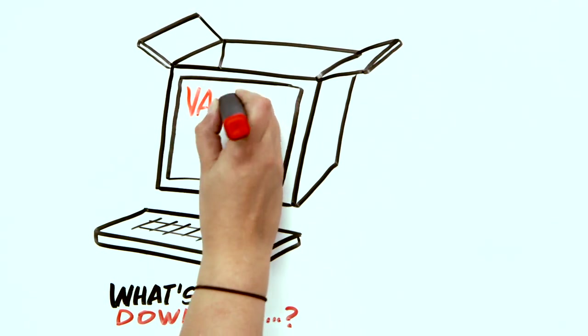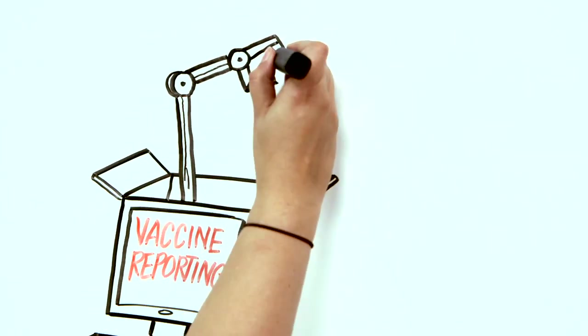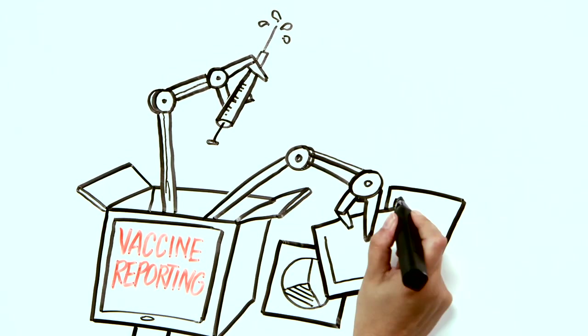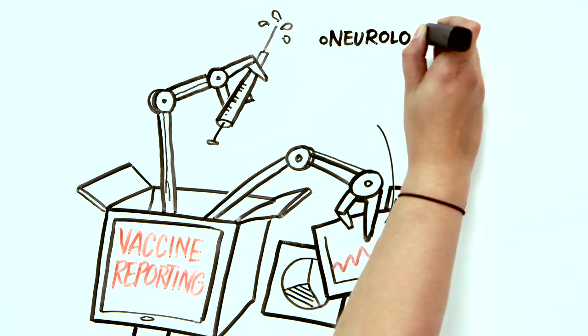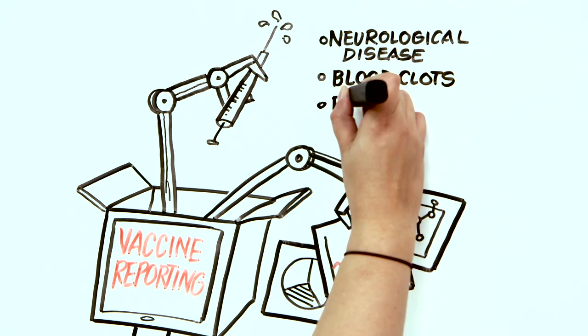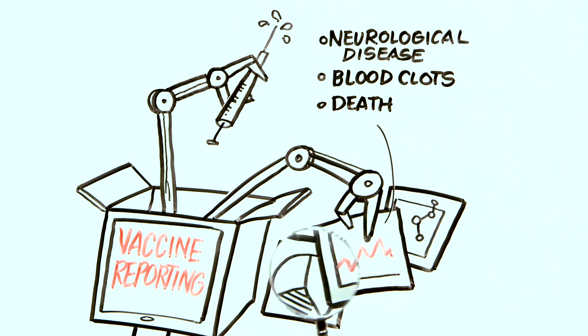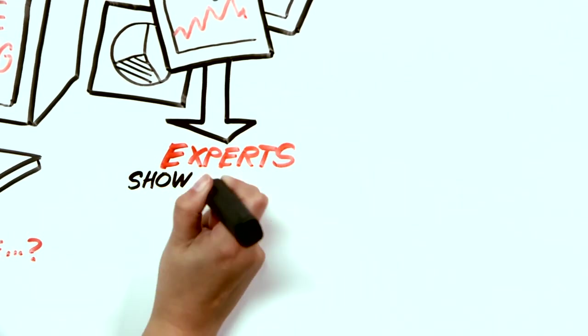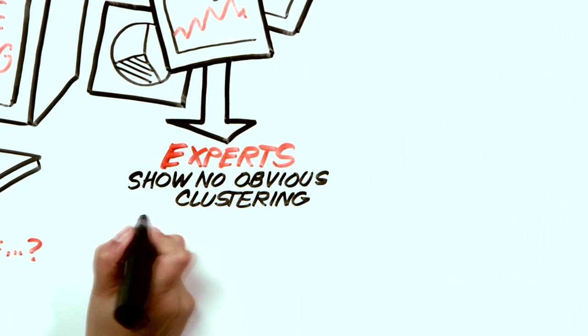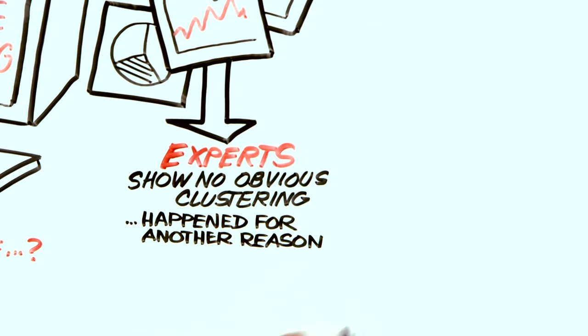So I suppose the next question is, what's the downside to getting the vaccine? Vaccine reporting systems, which collect adverse events and then analyze any worrisome patterns, have signaled possible neurological disease, blood clots, and even death. But when these serious events are analyzed by expert groups, they have showed no obvious clustering to suggest causality, meaning they most likely happen by chance or for some other reason.